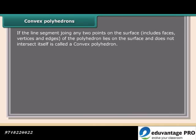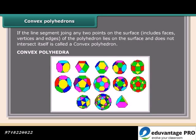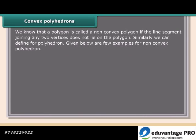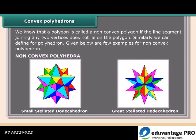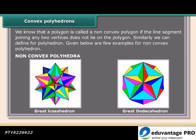A convex polyhedron is one where the line segment joining any two points on the surface lies on the surface and does not intersect itself. A polygon is called a non-convex polygon if the line segment joining any two vertices does not lie on the polygon. Similarly, non-convex polyhedrons include the small stellated dodecahedron, great stellated dodecahedron, great icosahedron, and great dodecahedron.